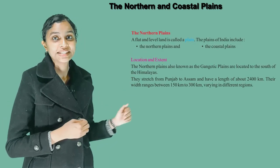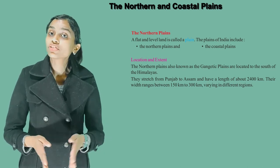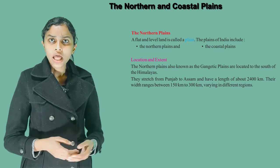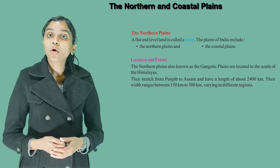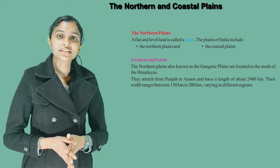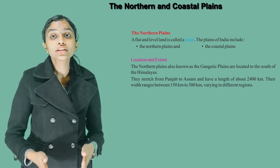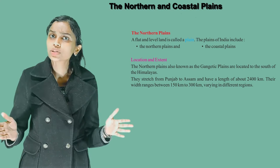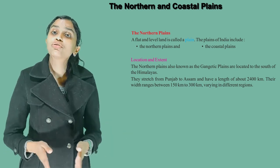The Northern Plains. A flat and level land is called a plain. The plains of India include the Northern Plains and the Coastal Plains. The Northern Plains are also known as the Gangetic Plains, located to the south of the Himalayas. They stretch from Punjab to Assam and have a length of about 2400 km. Their width ranges between 150 km to 300 km, varying in different regions.